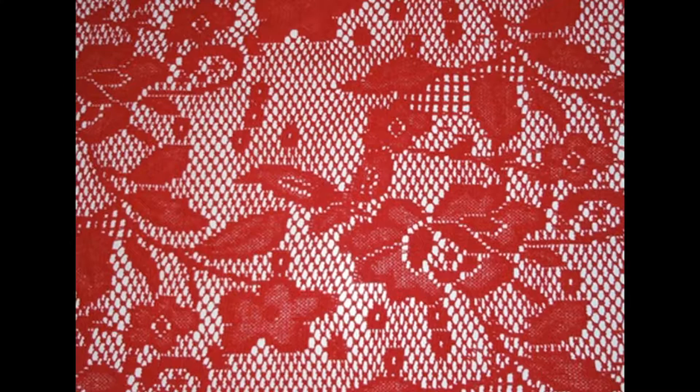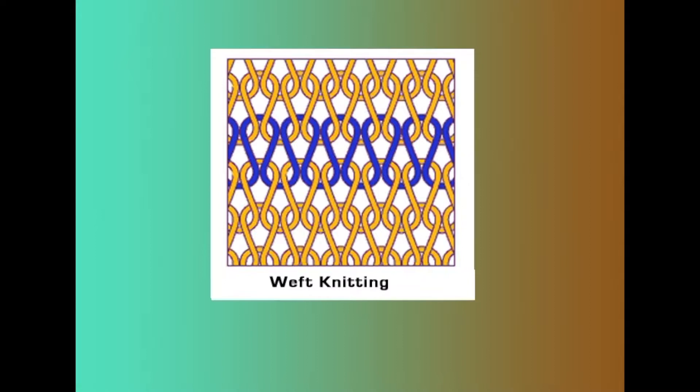Warp knitting may be flat or tubular and can be produced in many varieties of patterns. It can yield cloth with a dimensional stability almost equal to that of woven fabric.